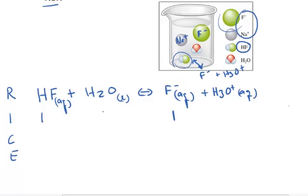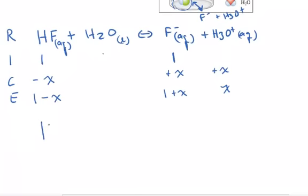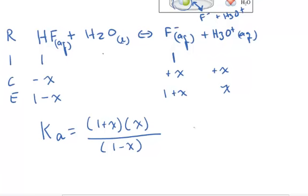The change row: because it's a one-to-one molar ratio and it's an acid, we assume it dissociates to a limited extent, producing a little bit of fluoride ion (+X) and a little bit of hydronium ion (+X). So at equilibrium the concentrations are one minus X for HF, one plus X for F⁻, and X for H₃O⁺. Then set up the equilibrium expression: Ka equals [F⁻][H₃O⁺] divided by [HF].